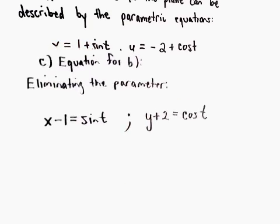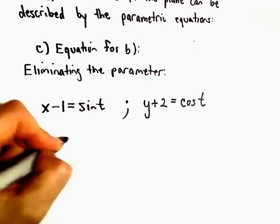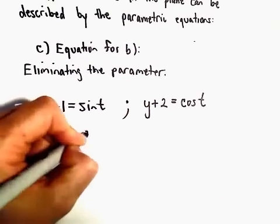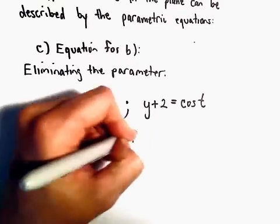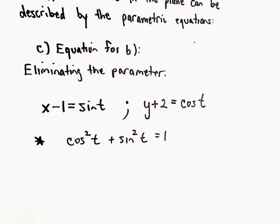But now we're going to use a little trig identity. So recall, cosine squared of t plus sine squared of t. That's going to equal positive 1.